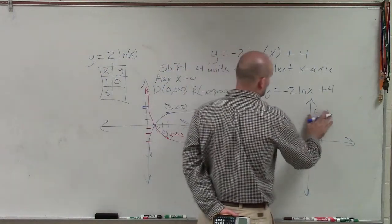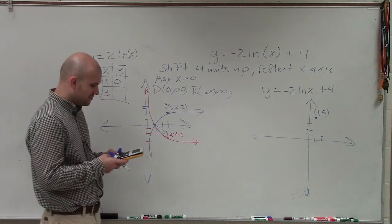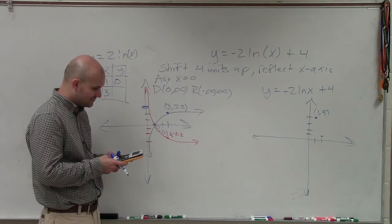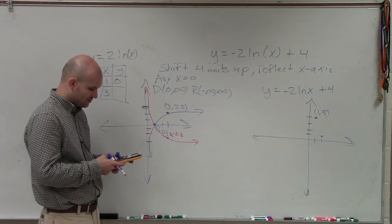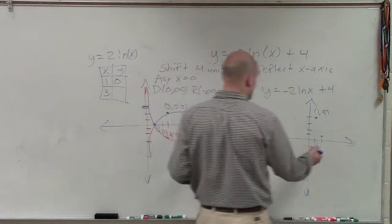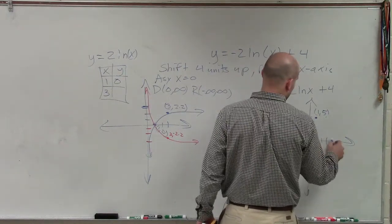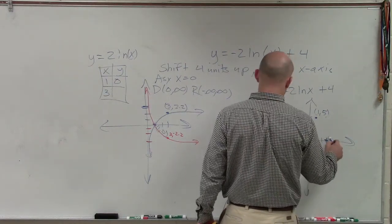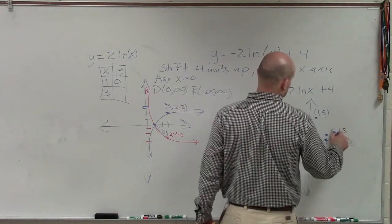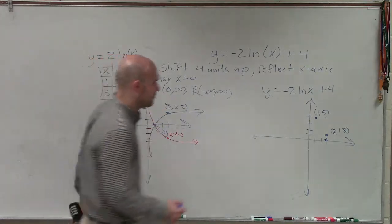I'm sorry, 1 comma 4. And then this graph, if you even look at this, just to confirm, if you do negative 2.2 plus 4, that's now going to be 1.8. So this point is now going to be at 3, comma, 1.8. And again, my graph is reflecting, so it's going to be in that formation.